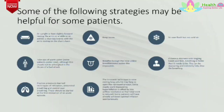Useful strategies for patients during an attack: sit upright or lean slightly forward resting on the arms or a table, or sit astride a chair backwards with arms resting on the chair back. Keep warm. Sit near fresh air but not cold. Take sips of warm water. Breathe through the nose unless breathlessness makes this impossible. If there is dizziness and tingling in hands and feet, breathing is faster than it seems — this can indirectly help slow down breathing. Practice previously learned techniques of relaxation, abdominal breathing, and controlled breathing at the first sign of an acute episode. Techniques to raise resting lung volume may help open narrowed airways.